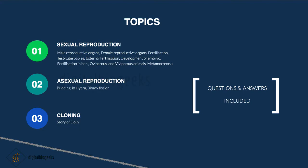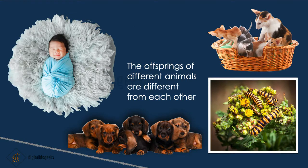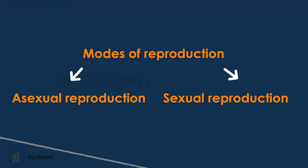The offspring of different animals are distinct from each other. For example, the young one of a human is called a baby, and of a cat is a kitten. Similarly, for a dog it is a puppy and for a butterfly it is a caterpillar. There are two modes of reproduction: asexual reproduction and sexual reproduction. We will discuss about sexual reproduction in animals.